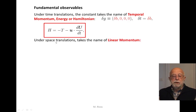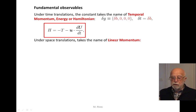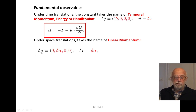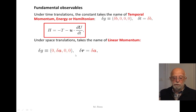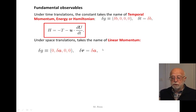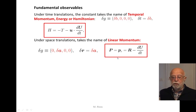Under space translation, we give the name linear momentum to this conserved quantity. The only elements are the space translation parameters, and the only kinematical variables which transform are the corresponding Cartesian coordinates. Therefore the MR functions equal R, and the conserved linear momentum is just the conjugate momentum of the R variables.